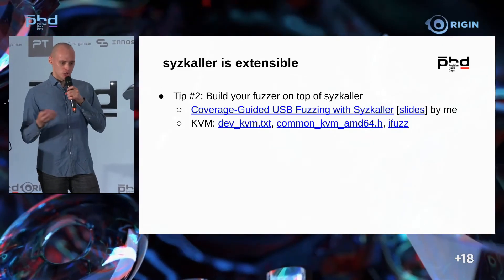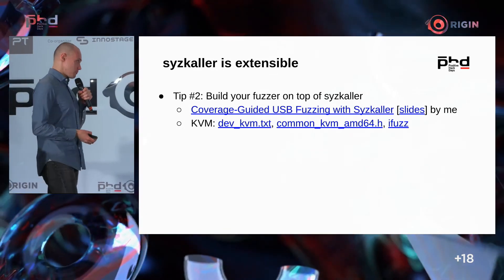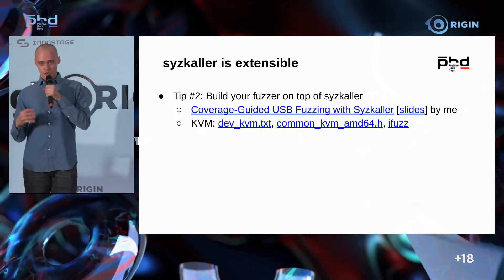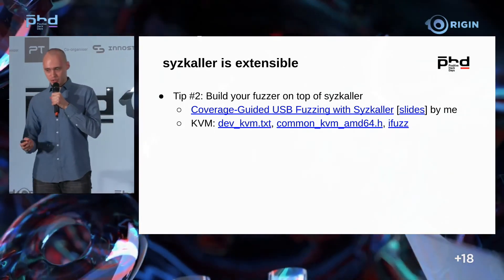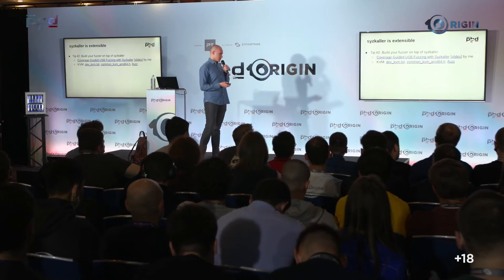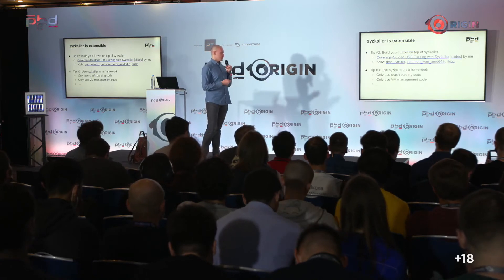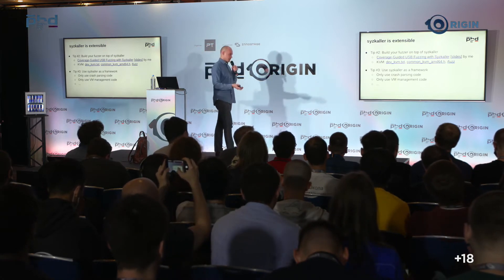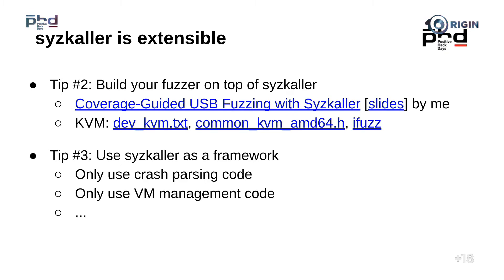Also, syzkaller is not just a fuzzer — it's an extensible thing you can modify. When I was analyzing the USB case, I added parts to the fuzzer to use it for USB. It can also be used as a framework: you don't just launch the binary but take the part of code that parses the kernel log. It can recognize hundreds of different errors that can happen within the kernel, and you can reuse that code.